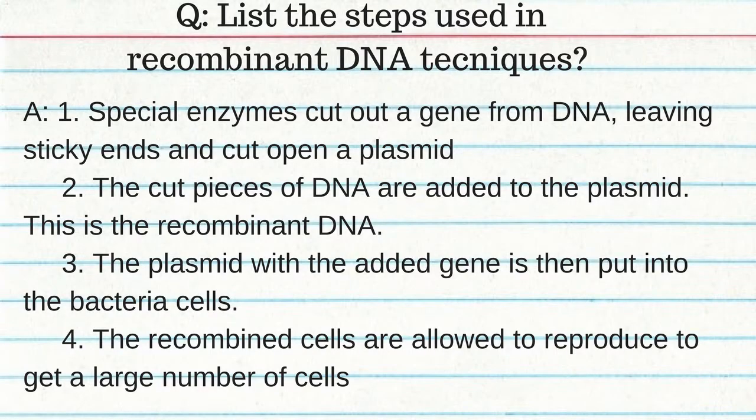Genetic engineering involves adding desired traits into an organism's genome. A plasmid is a small circular piece of DNA found in bacteria. Steps in recombinant DNA techniques: special enzymes cut out the gene from DNA, leaving sticky ends, and cut open the plasmid; the cut DNA is added to the plasmid — this is recombinant DNA; the plasmid with the added genes is put back into bacteria cells; the recombined cells reproduce a large number of cells using mitosis.